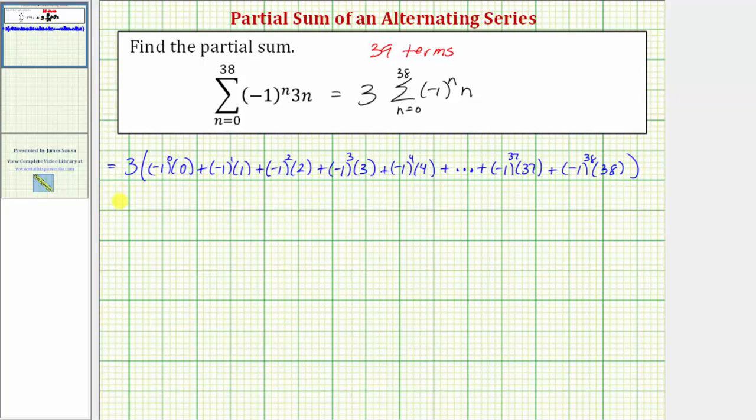Now let's go ahead and simplify. So here we have three times the quantity, this would be zero. This is going to be negative one, so we have plus negative one. We could just write minus one, but I'll leave it as a sum. Plus negative one to the second times two is positive two. Plus negative one to the third times three is negative three. Plus negative one to the fourth times four is four.